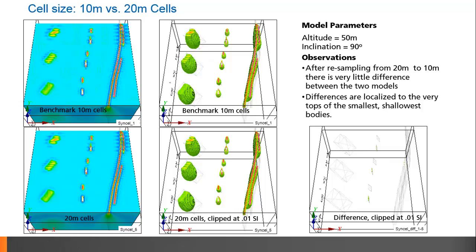In this first slide, we see the 10 meter cell benchmark model clipped to 0.01 SI, and a 20 meter cell model also clipped to 0.01 SI. We note that the models are similar, and when we view the difference between the two, we note that increasing line spacing to the north did not exacerbate the result.